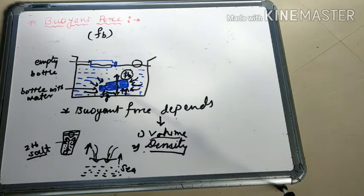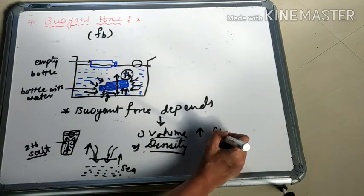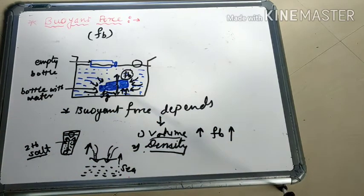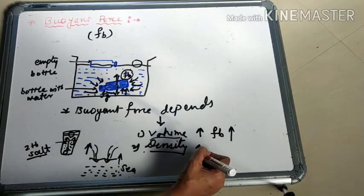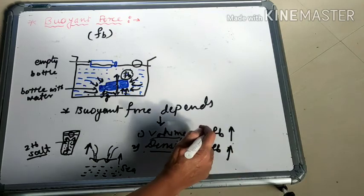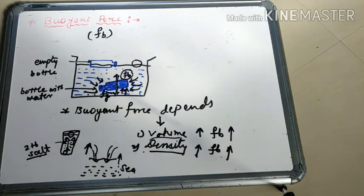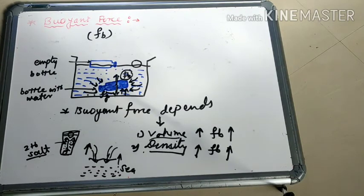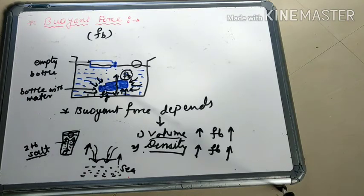From these examples we understand that Buoyant force depends on two factors. First is the volume of the object — more volume means more Buoyant force. Second is the density of the liquid — more density of the liquid means more Buoyant force. Now, how is it decided whether an object left in a liquid will sink, float on the surface, or float inside the liquid?